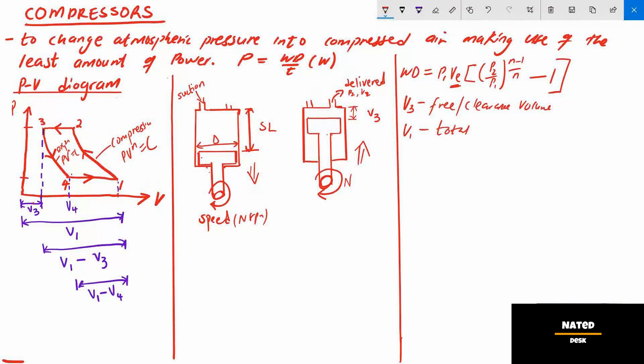V1 is total volume. The stroke volume Vs is equal to V1 minus V3.